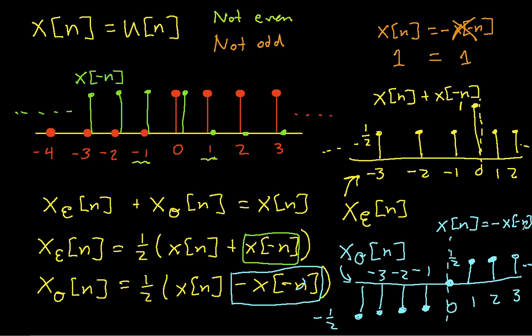So we've taken the unit step function, found it was neither even nor odd, and decomposed it into its even and odd components. Why do we want to do this? Even and odd signals each have particular properties very useful in Fourier transform analysis — the Fourier transform of an even signal is real, and of an odd signal is imaginary. There are all sorts of useful symmetry properties that come from even and oddness. In part two of this video, we'll go through the remaining signals and do the same analysis. Thanks for watching.